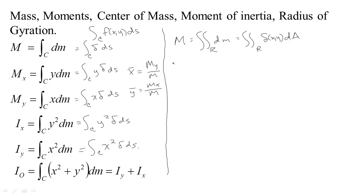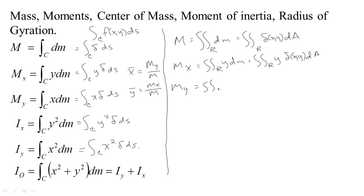That's just one application of a double integral, and all these formulas will be basically the same. If we're talking about a moment about the x-axis, you measure the distance from the x-axis and multiply by the mass. You get the little bit of mass by taking the density — which is a function of x and y — times the area. Do you see how all these formulas use the same concept? It's just a double integral now instead of a line integral: the integral over R of x times density dA.